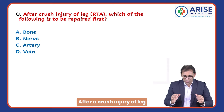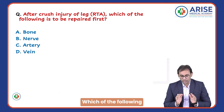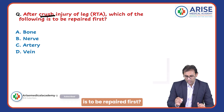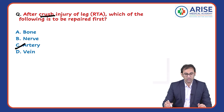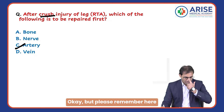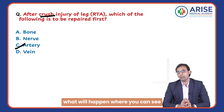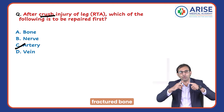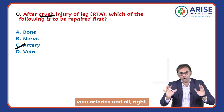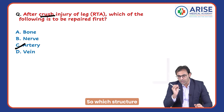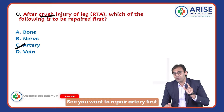After a crush injury of the leg in a case of road traffic accident, which of the following is to be repaired first? You might be thinking about the artery. But remember, in a case of crush injury, you can see fractured bone, ruptured blood vessels, veins, arteries — so which structure are you going to repair first?